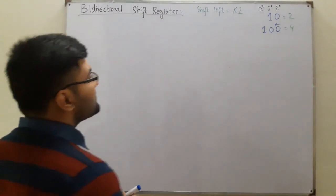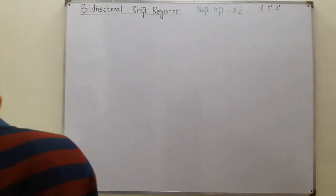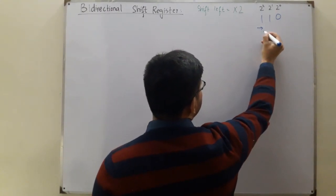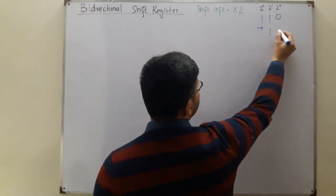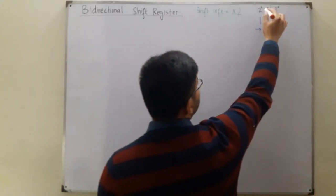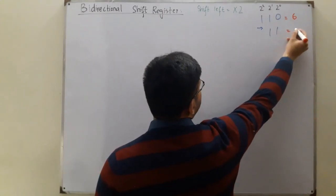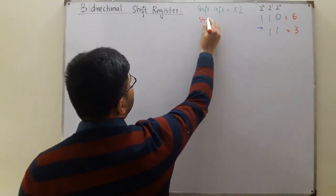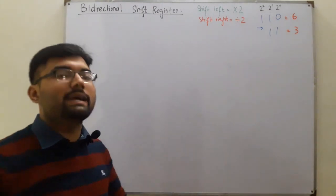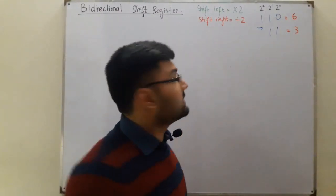Now let's take another number: 1 1 0. If I shift it to the right, the 2^2 bit comes to 2^1, the 2^1 bit comes to 2^0, and the 2^0 bit is dropped out. 1 1 0 in decimal is 6, and after shifting, 1 1 in decimal is 3. So shifting bits to the right divides the original number by 2. You can verify this with as many examples as you like.